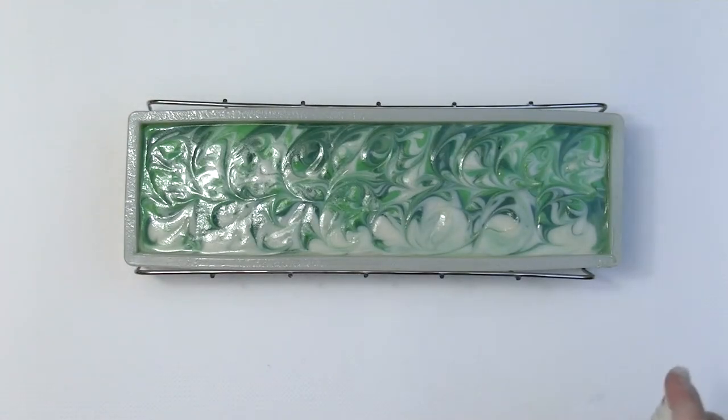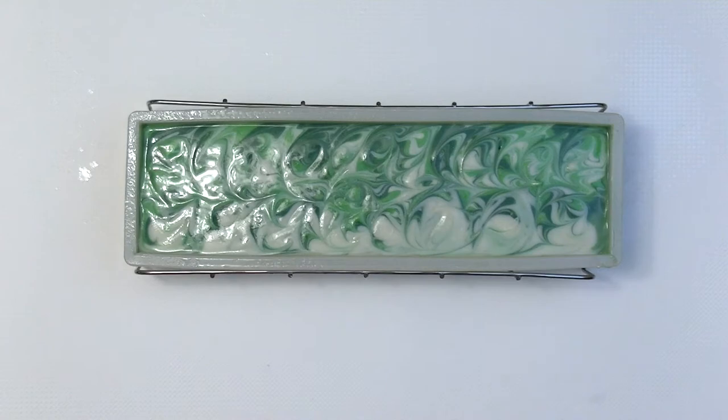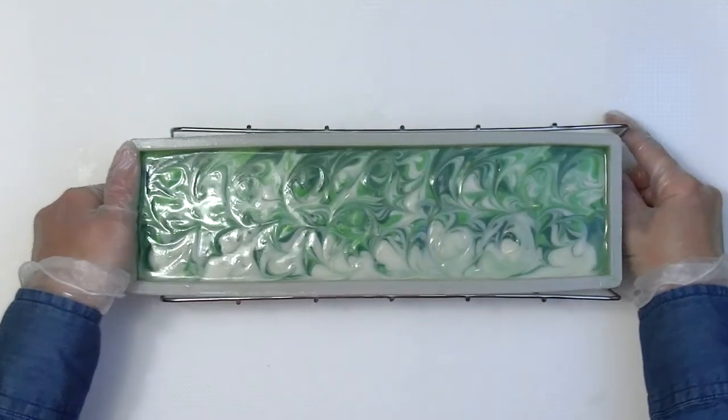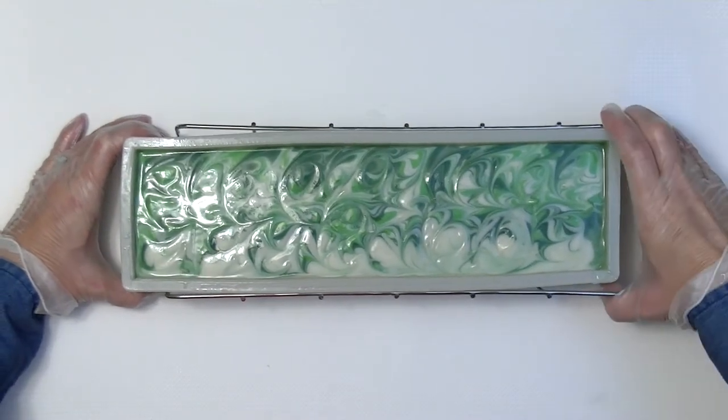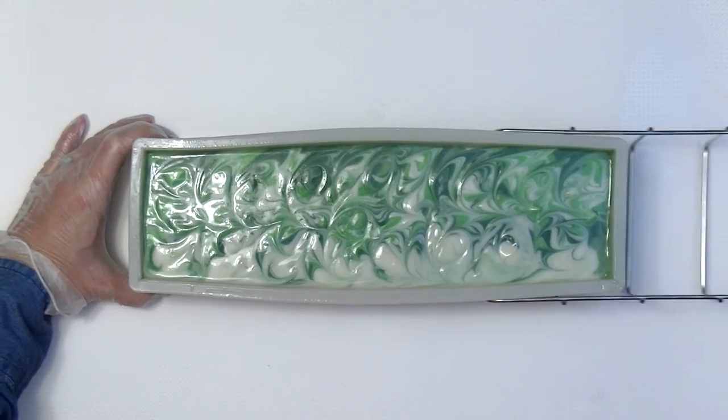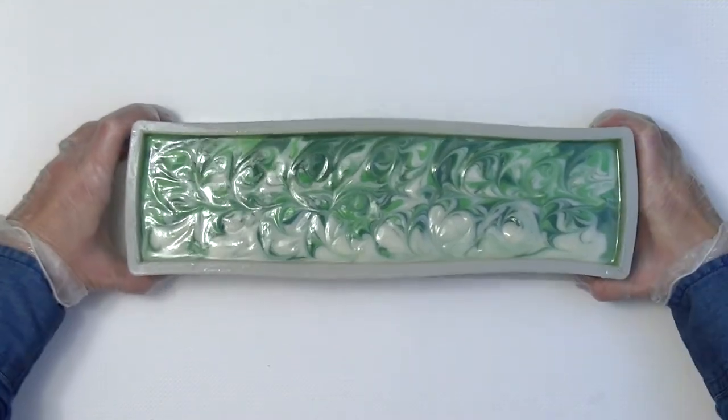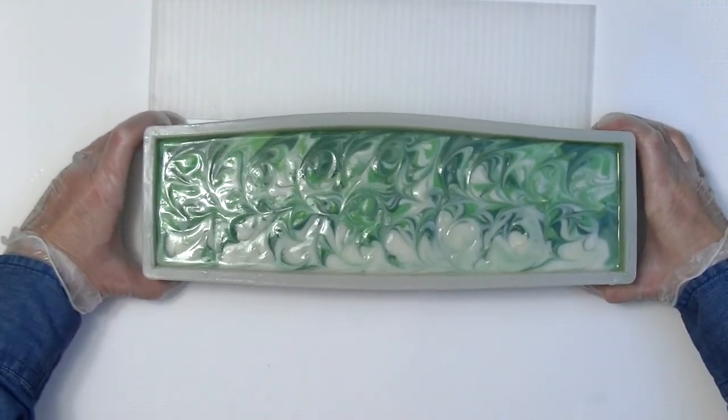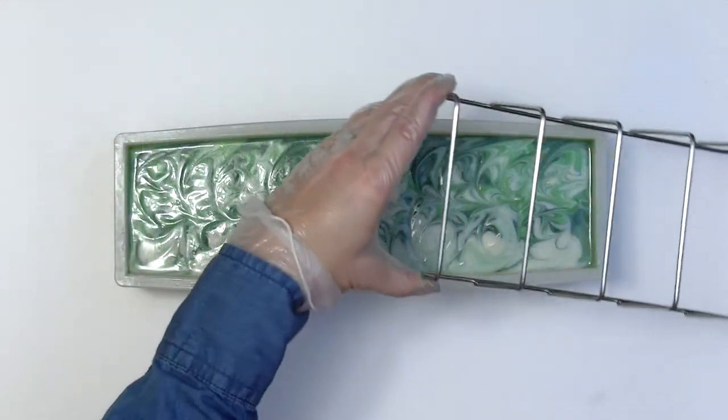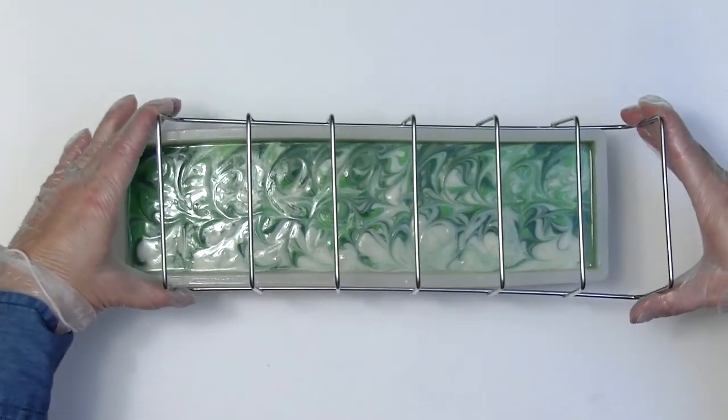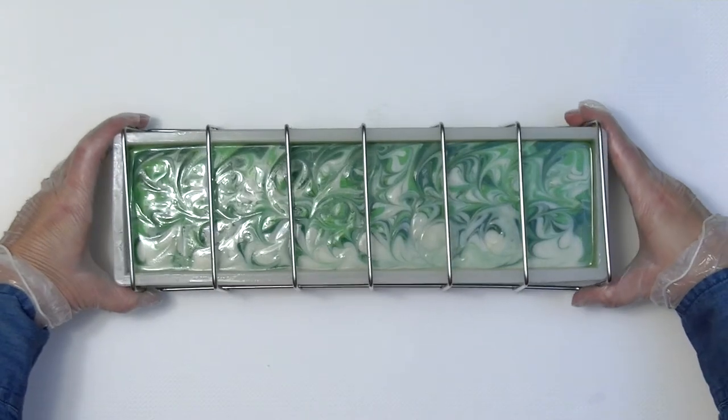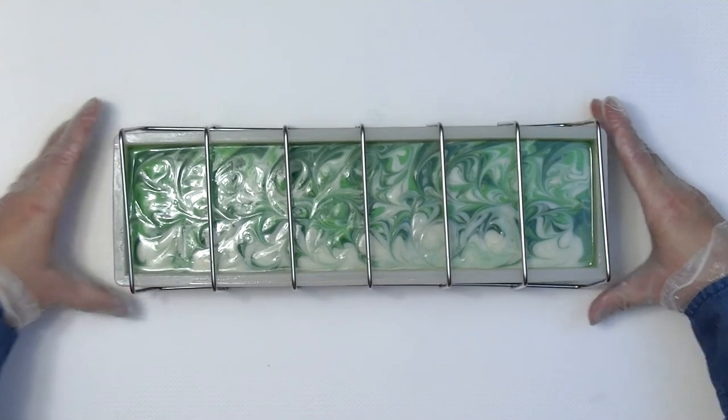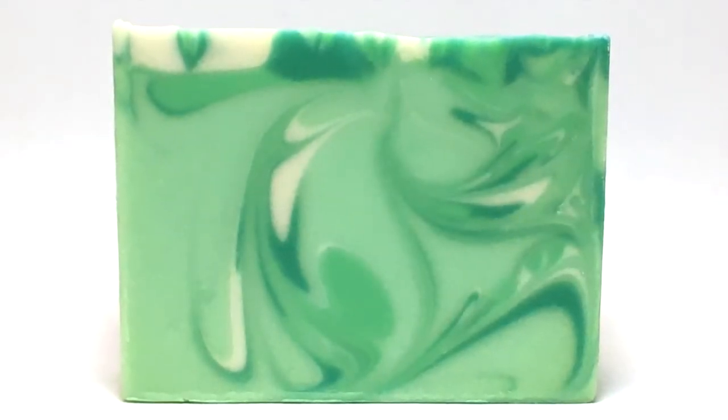I spray with rubbing alcohol to help prevent ash. Now to put the mold holder over the top to brace the sides. I'll put the soap in a box and under a blanket for about 24 hours. And here's the cut soap.